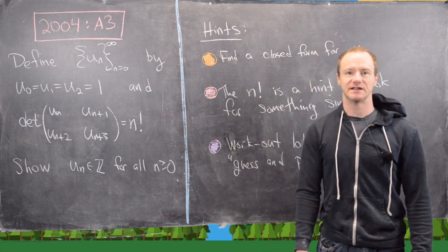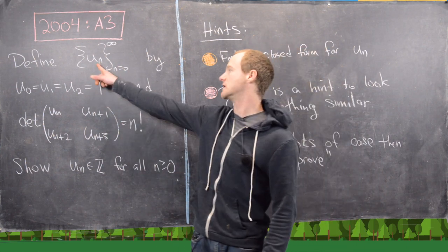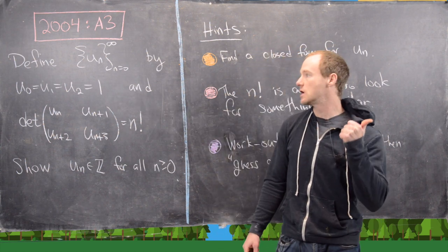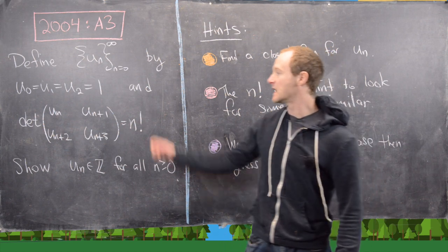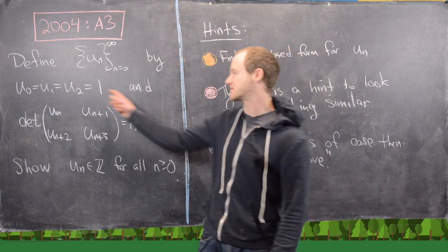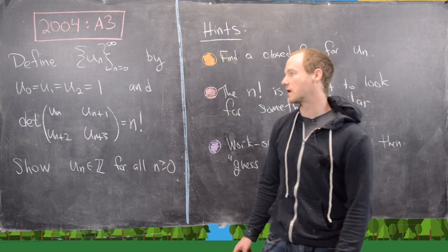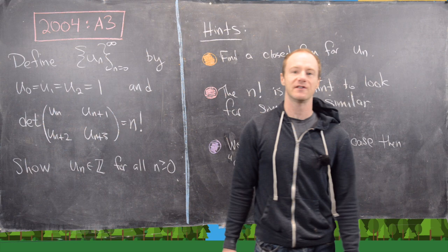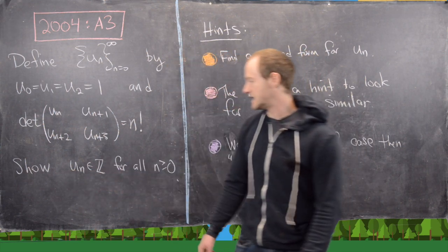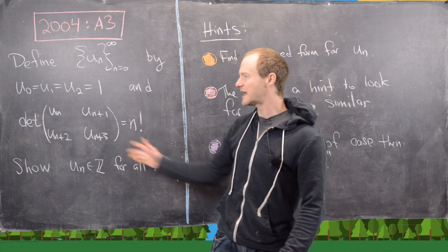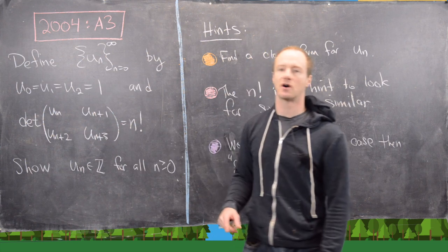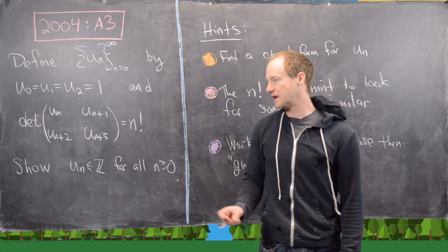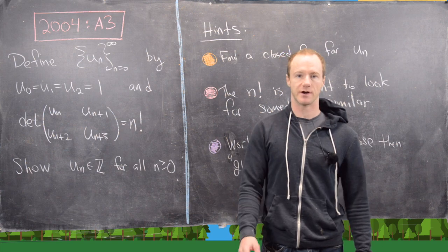Now let's look at the statement of this problem. We want to define this sequence as follows: call it u_n for n equals zero to infinity. The first three terms are all one — u_0, u_1, and u_2 are all equal to one. Then u_n after that is defined by the following recursion given by a determinant formula: the determinant of the 2×2 matrix with entries u_n, u_{n+1}, u_{n+2}, u_{n+3} equals n factorial. The goal is to show that u_n is an integer for all n ≥ 0. That's not clear, because even though these are integers, it could be that higher up in the sequence you need rational numbers in order to give you n factorial.